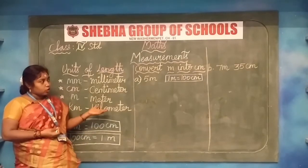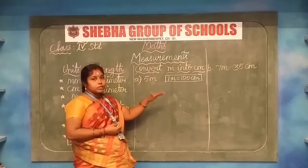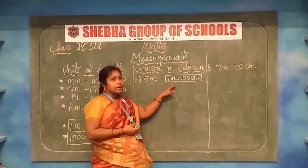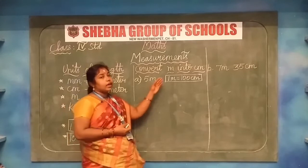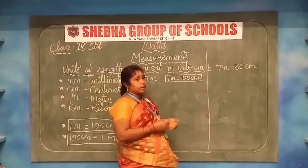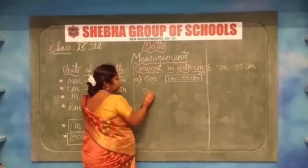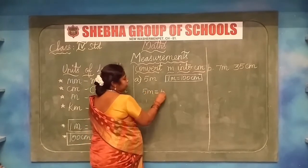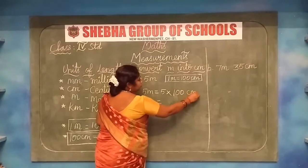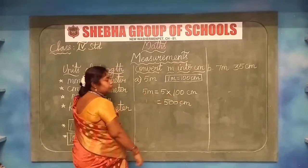Let me explain how to convert meter into centimeter. To convert the bigger unit into a smaller unit, we have a formula: one meter equals 100 centimeter. For example, 5 meter: we write 5, then multiply by 100. So 5 into 100 gives us 500 centimeter. We have converted 5 meter into 500 centimeter.